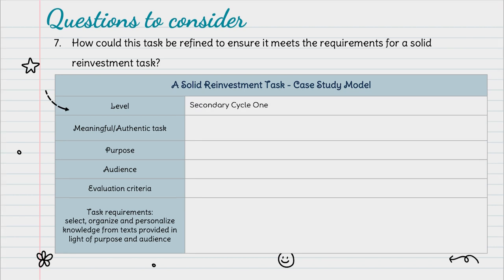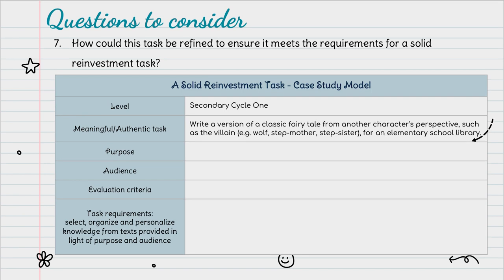Just because this task doesn't currently meet the requirements for a solid reinvestment task doesn't mean it can't be tweaked to do just that. We already know the level of the students — they are Secondary Cycle 1 students. To make the task meaningful or authentic, we could ask students to write a version of a classic fairy tale from another character's perspective, such as the villain — for example, from the wolf, the stepmother, or a stepsister — for an elementary school library.